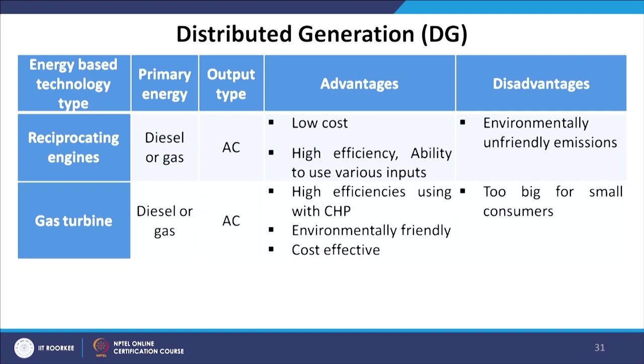There are different types of distributed generations. Let us discuss them based on their energy-based technology type, primary energy, output type, advantages and disadvantages. This will give us an idea of different types of distributed generators, how they can be integrated into the smart grid, what merits we can achieve, and the limitations we have to face.